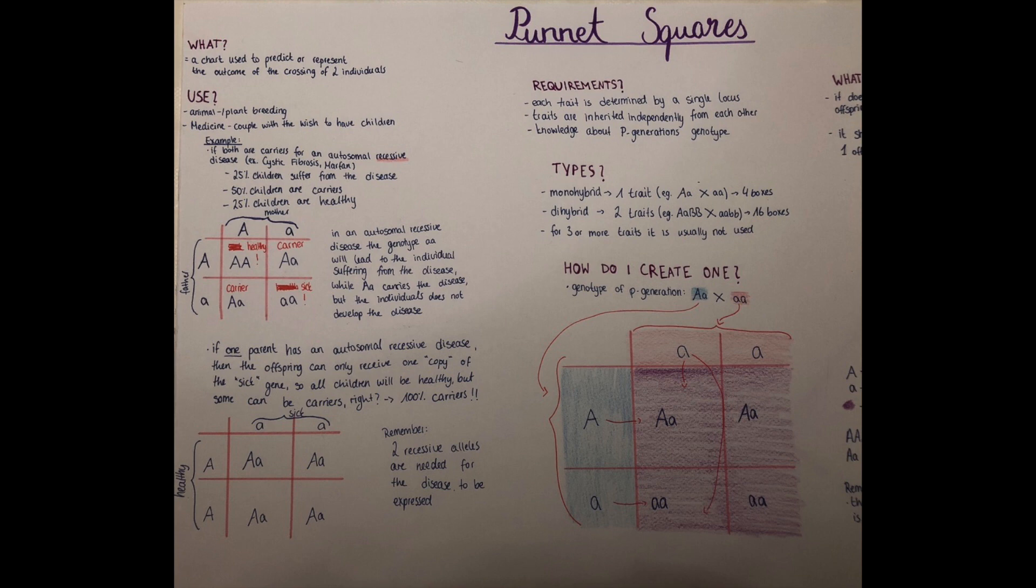Let's make an example. If there's a couple who has the wish to have a child, but both are carriers for an autosomal recessive disease like cystic fibrosis or Marfan syndrome, in which the disease is within the recessive allele, then in a Punnett Square can be represented how likely it is that one or more of their children will have the disease, will be carriers for the disease, or that they will be healthy.